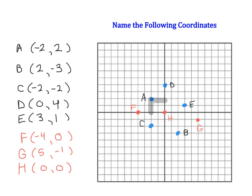Coordinate F is (-4, 0). Notice when we read it, we don't read the parentheses or comma — we just say coordinate F is negative four, zero. Coordinate G is (5, -1) and coordinate H is at the origin, (0, 0). That is all for today's lesson, thank you for watching!